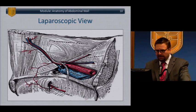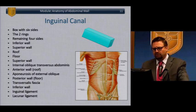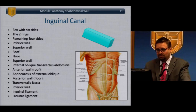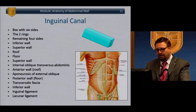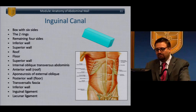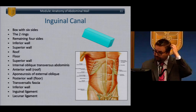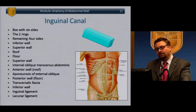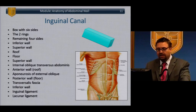The inguinal canal — for those doing hernia surgery, you know this anatomy well. You really need to think of the inguinal canal in three dimensions. It's not a flat structure, but a dynamic one. The two rings make up the front and back. The superior wall is a combination of the internal oblique and the transversus abdominis. The anterior aspect is the aponeurosis of the external oblique. The floor is the transversalis fascia — that's really what a direct hernia is, a defect in the transversalis fascia. Inferiorly is the inguinal ligament.